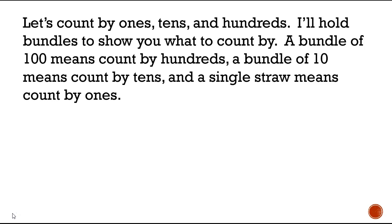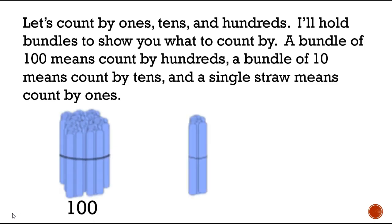We're going to start out by counting 1s, 10s, and 100s, and I'm going to hold up bundles to show you what to count by. A bundle of 100 means count by 100s, a bundle of 10 means count by 10s, and a single straw means count by 1s.